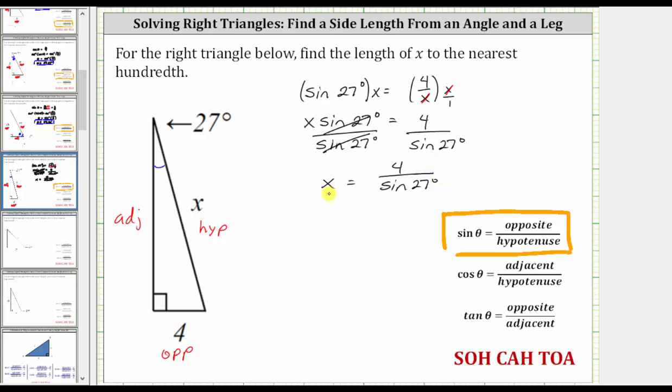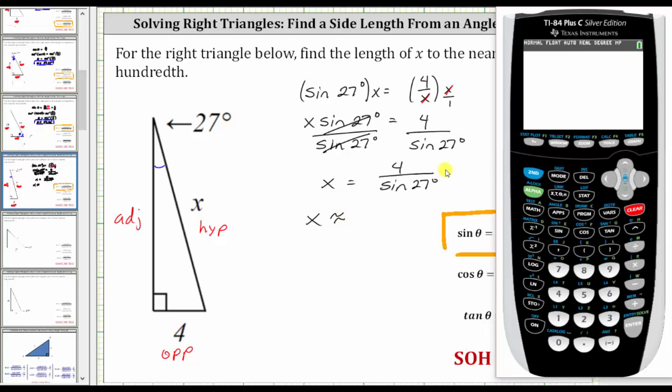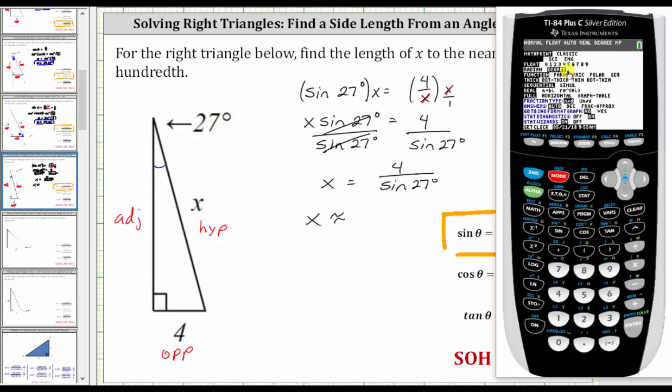And now we'll go to the calculator and get a decimal approximation for x. And we are told to round to the hundredths place value. The first step is to make sure the calculator is in degree mode by pressing the mode key. And notice how degree is highlighted. If it wasn't...